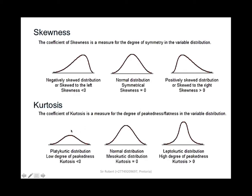Kurtosis: the coefficient of kurtosis is a measure of the degree of peakness or flatness in the variable distribution. There are different types of kurtosis. Leptokurtic is more pointed. A normal distribution is smoother and more symmetrical. Platykurtic is flatter, closer to the horizontal line. So get a general idea of skewness and kurtosis so that next time someone asks about it you'll know what we're talking about.